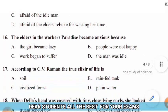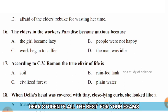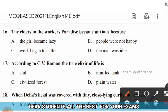Question 16: The elders in the workers' paradise became anxious because — options: (A) the girl became lazy, (B) people were not happy, (C) work began to suffer, (D) the man was idle. The right answer is option C — work began to suffer.